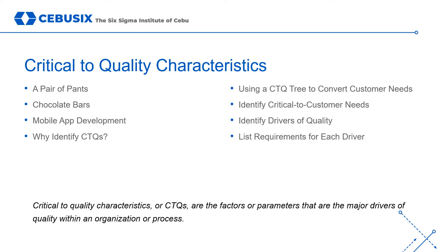Critical-to-quality characteristics, or CTQs, are the factors or parameters that are the major drivers of quality within an organization or process. Usually, CTQs are key characteristics that can be measured, where the performance of said metrics provides information about whether or not the customer is going to be satisfied. They are closely related to the CTCs, or critical-to-customer characteristics, but they are not the same thing. CTQs are internal concerns, but they drive CTCs.